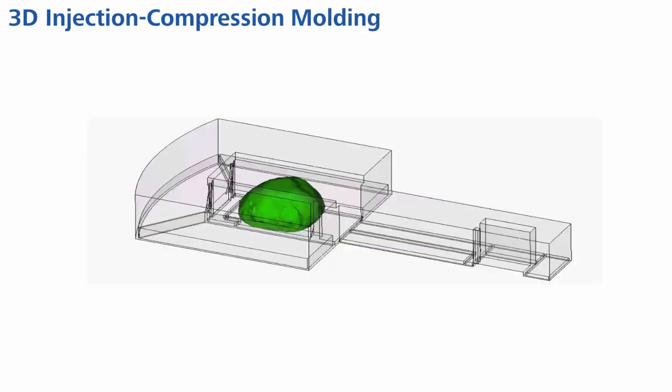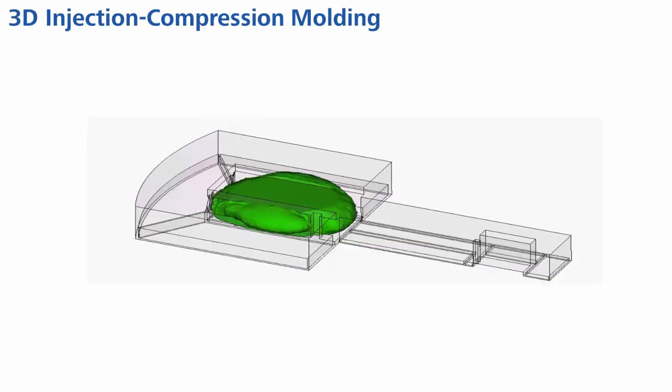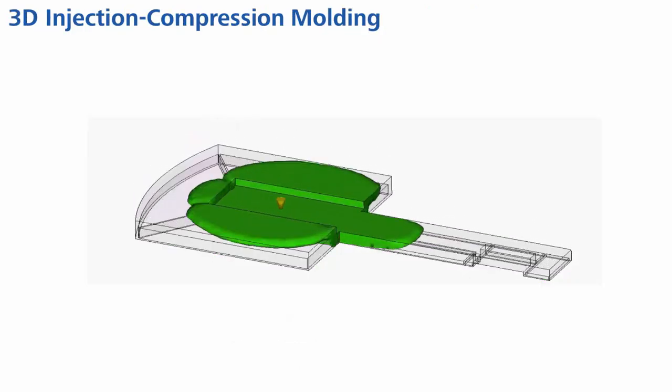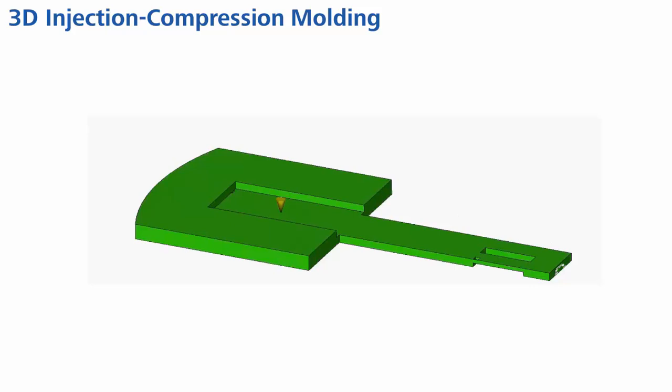Let's have a look at some examples. The injection compression technique is typically used for thermoplastic materials. Plastic is injected into a slightly open mold, and the mold closing will form the part.